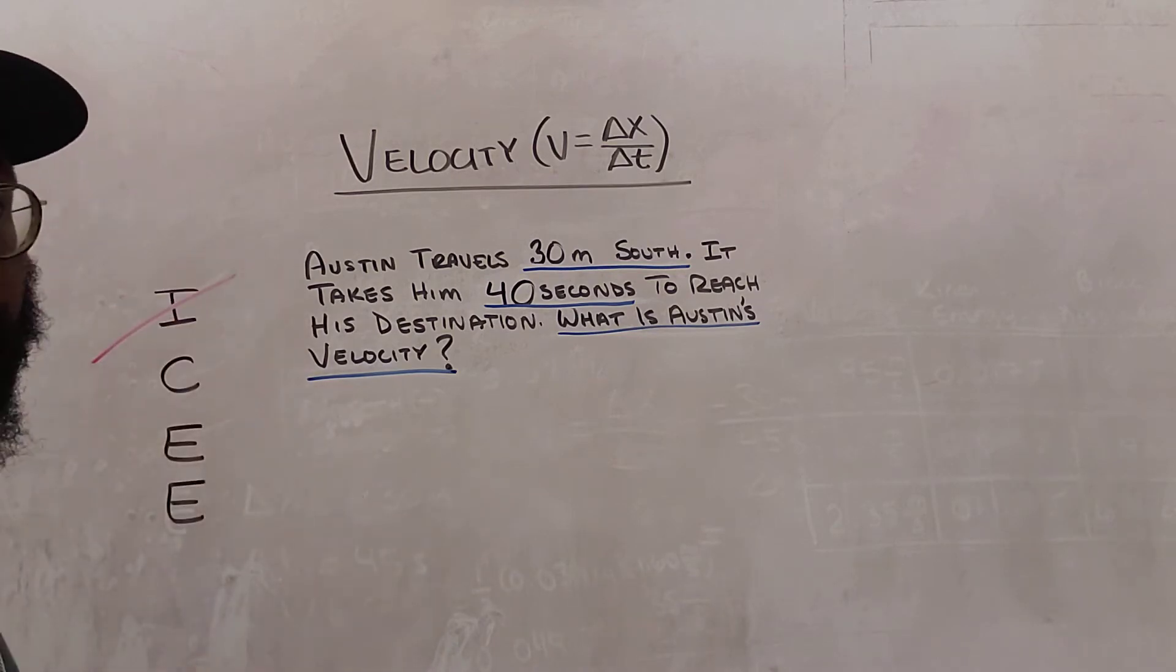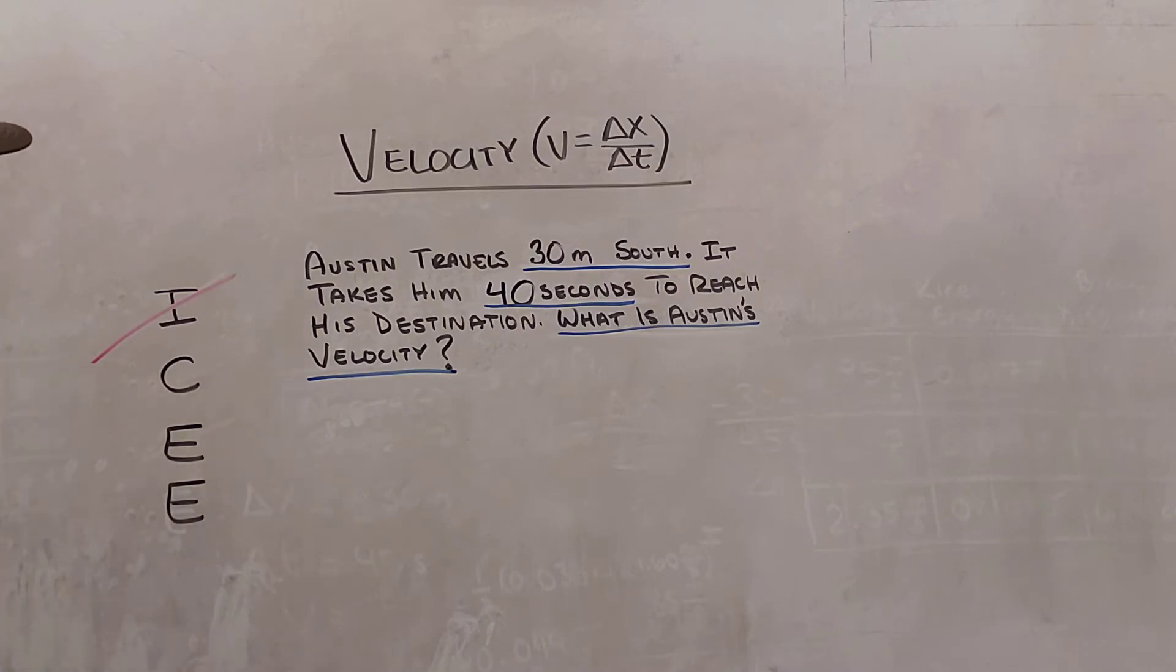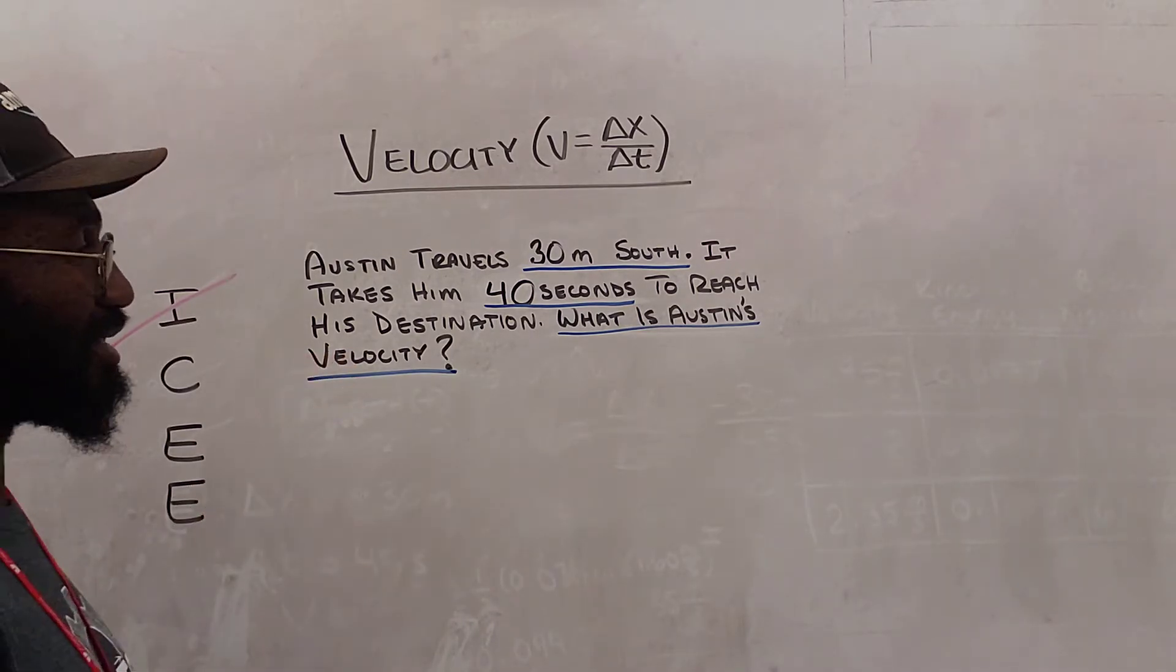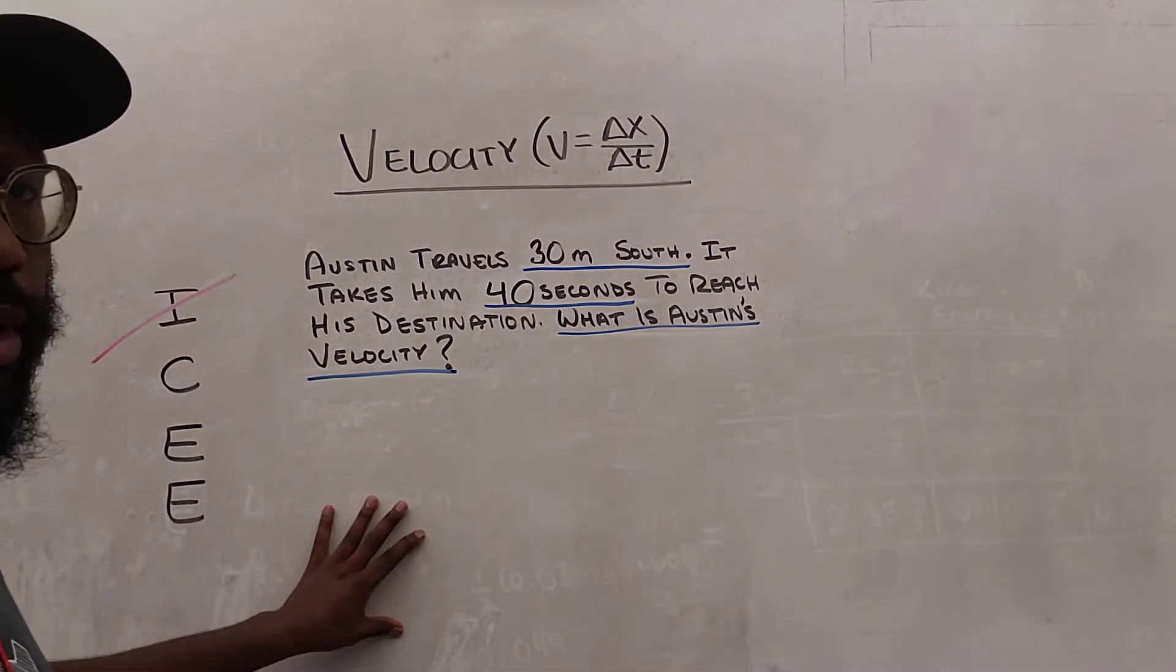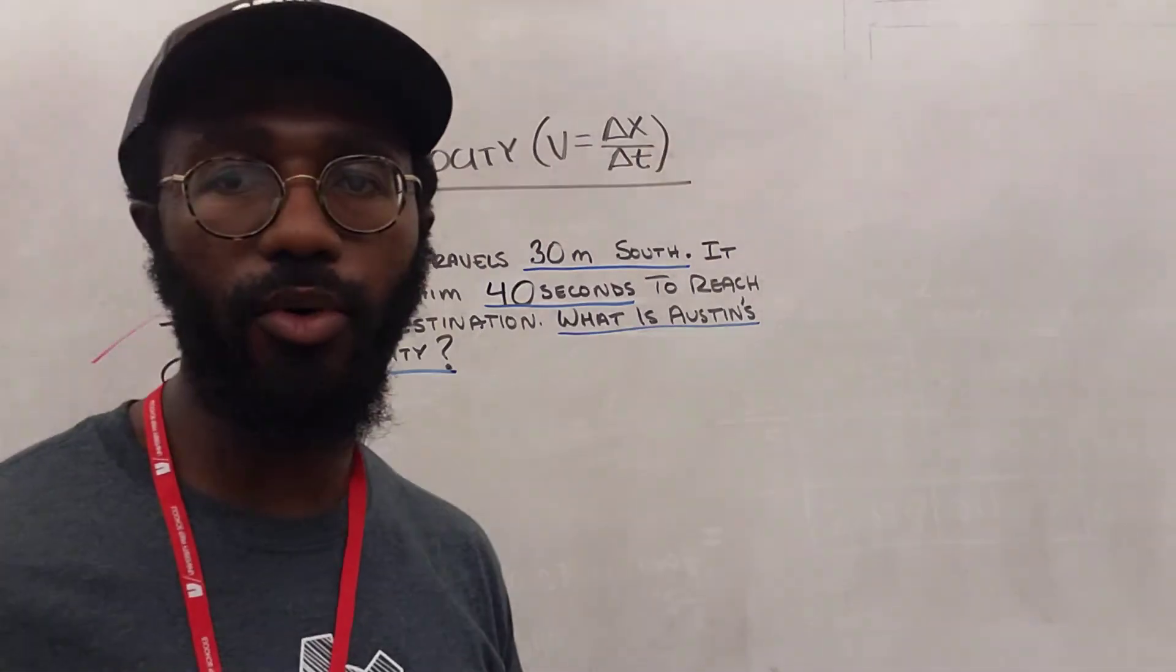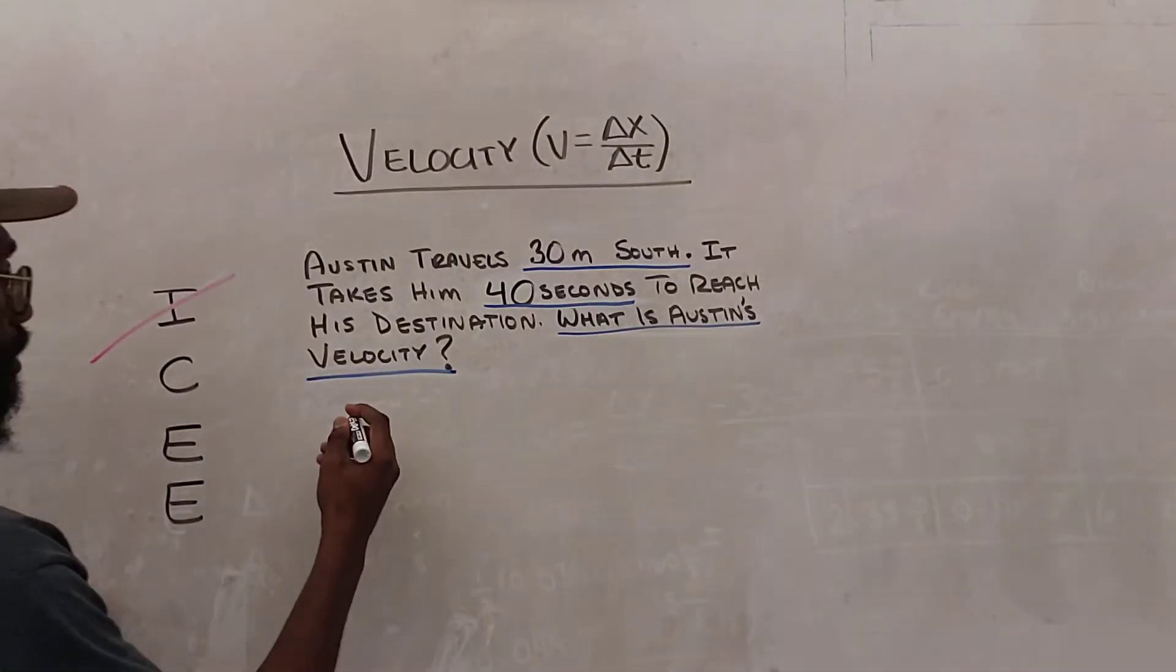Next, we identify all of the measurements and the question in the problem. So next, we're going to do our categorize step. This is where we put all of our measurements and our question on the board, and we figure out what a variable would categorize that measurement. So let's go ahead and do that.